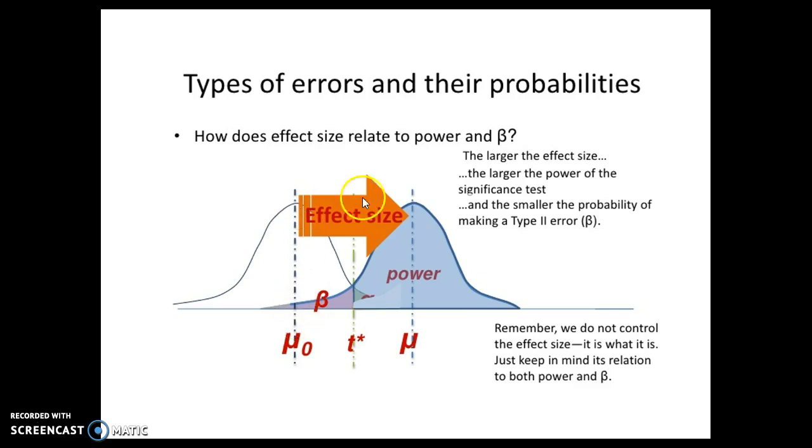When it comes to these two groups, if this is the null and this is the alternative, this was a pre-post, let's say. Pre-test, everybody was here. Post-test, everybody was here. We moved the entire distribution quite a bit because of whatever intervention we were doing. That is a large effect. The larger the effect size, the larger the power of the significance test. We can shade in all of this stuff. That also means it's a smaller probability of making a type 2 error. Remember, this gets kind of confusing. We don't control the effect size. It just is what it is, and it's completely different depending on your field.